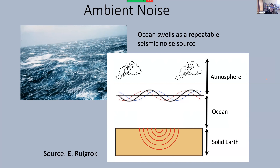I thought I would start quickly just with a little background on ambient noise, then get into how ambient noise interferometry works, and then give you a sense for the state of the art in terms of understanding changes in seismic velocity associated with volcanic eruptions. So let's start with what ambient noise is, or in my case, what the ambient noise signal is that I'm honing in on.